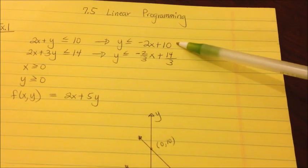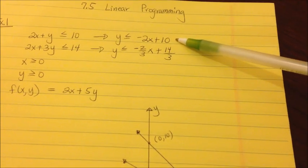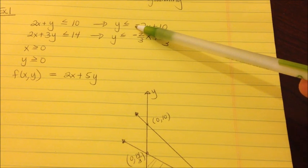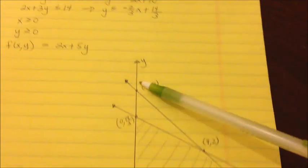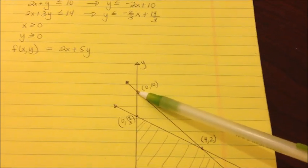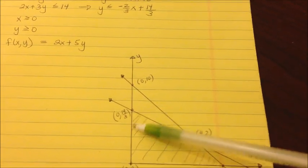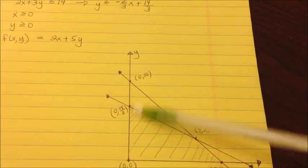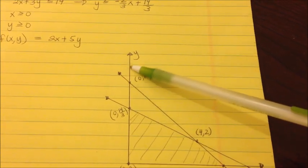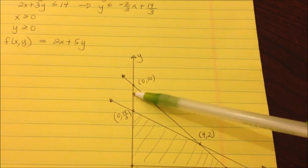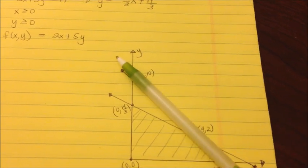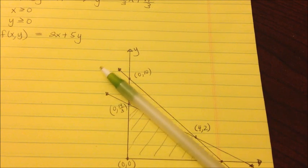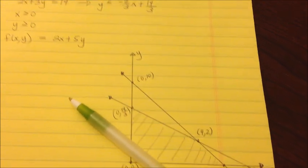Now let's walk through the shading. For the first graph, since y is less than, we shade everything below the line — because y is getting smaller going downward, not upward. So everything on and below this line represents the solution for that first inequality.